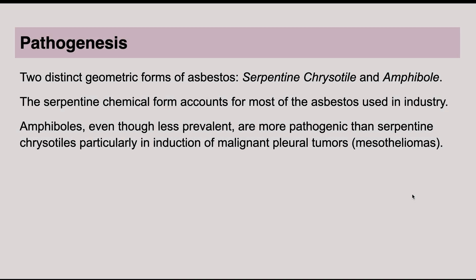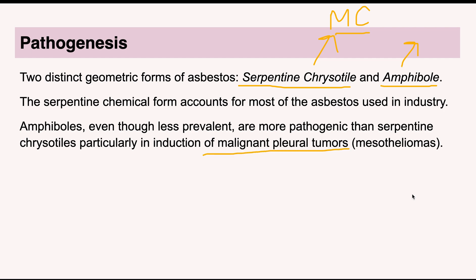Now going to the pathogenesis. In the chemical industry, there are two geometric forms of asbestos mainly used: one is known as serpentine chrysotile and the other is the amphibole type. Chrysotile is the most common one used in industry and is less pathogenic. However, the amphibole is used very little but is very pathogenic — it is responsible for the formation of mesotheliomas, the malignant pleural tumors.